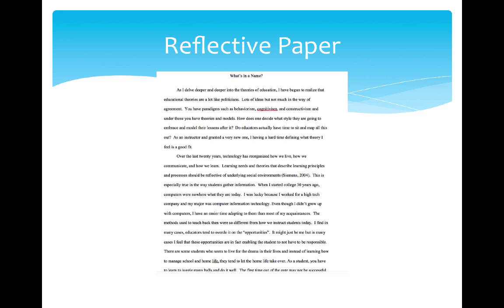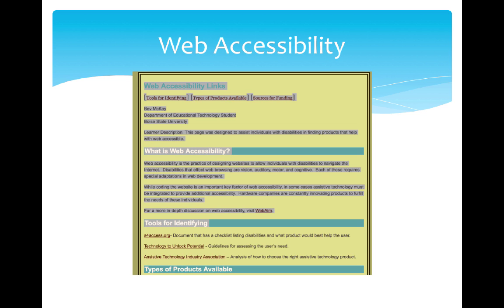Indicator 4.3, Reflection. Analyzing and interpreting data and artifacts for effectiveness. In my reflective paper for 504, I researched the theories of education. There are many theories, and while each theory has valid points, they tend to be very subjective.